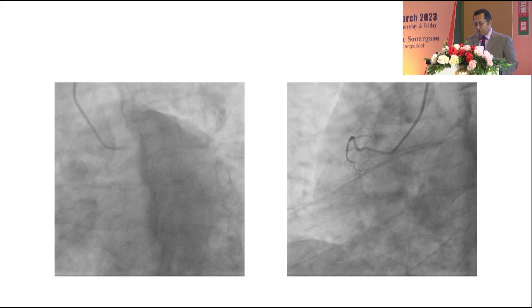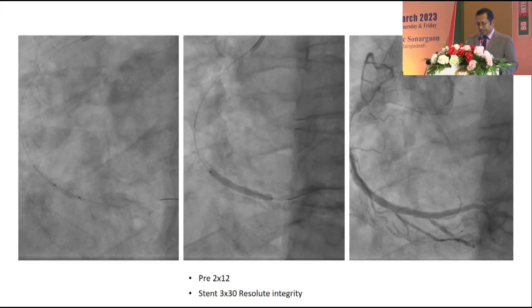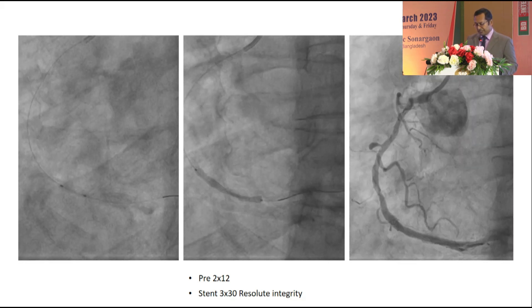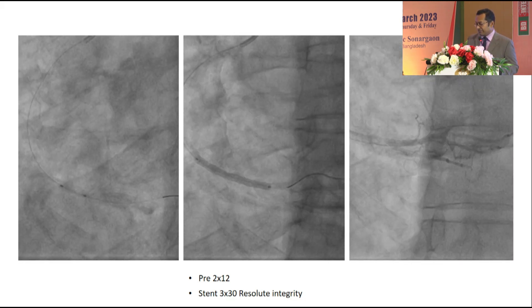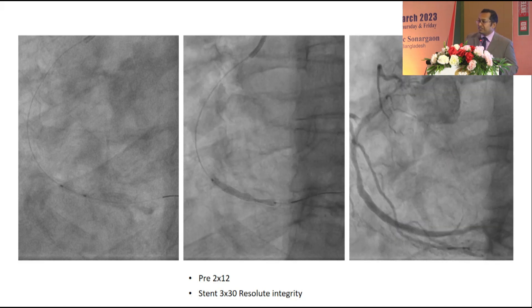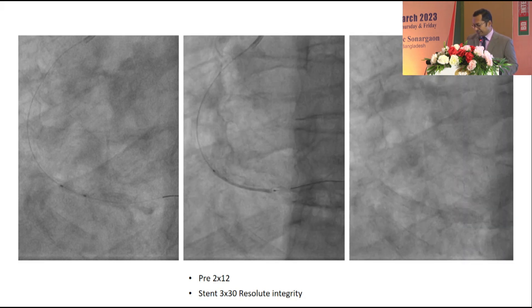We proceeded with the RCA first. It was done very smoothly with a 2.12 pre-dilation balloon and a stent of 3x30 Resolute Integrity, with a satisfactory result — TIMI 3 flow in the RCA.